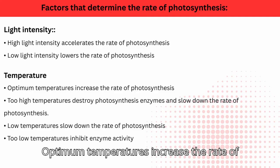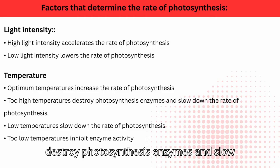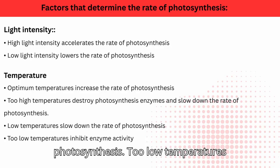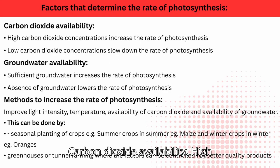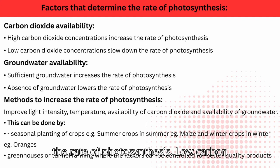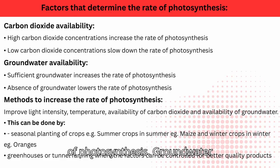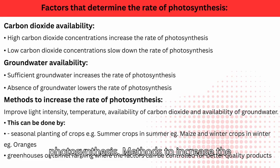Temperature: optimum temperatures increase the rate of photosynthesis. Too-high temperatures destroy photosynthesis enzymes and slow down the rate of photosynthesis. Low temperatures slow down the rate of photosynthesis and inhibit enzyme activity. Carbon dioxide availability: high carbon dioxide concentrations increase the rate of photosynthesis; low carbon dioxide concentrations slow down the rate of photosynthesis. Groundwater availability: sufficient groundwater increases the rate of photosynthesis; absence of groundwater lowers the rate of photosynthesis.